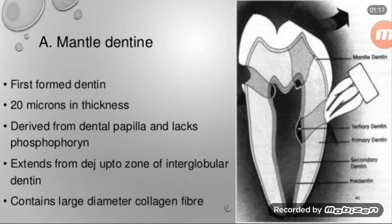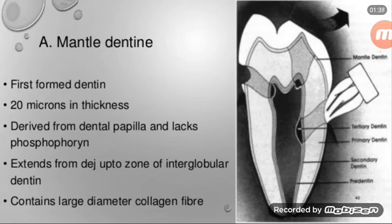What is mantle dentine? These are the first formed dentine, 20 microns in thickness, derived from the dental papilla, and lacks phosphorine. These extend from the dentino-enamel junction (DEJ) up to the zone of interglobular dentine. This contains a large number of large diameter collagen fibers.